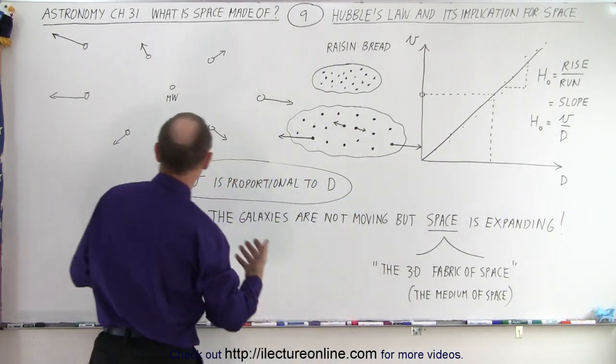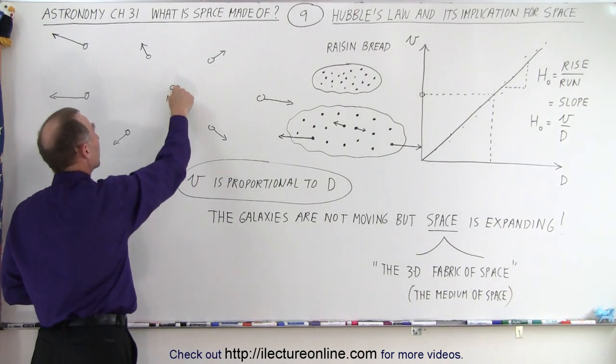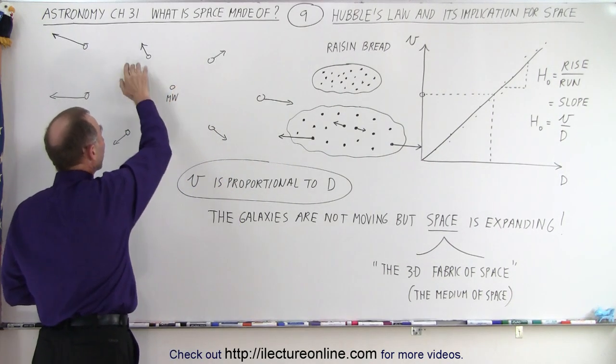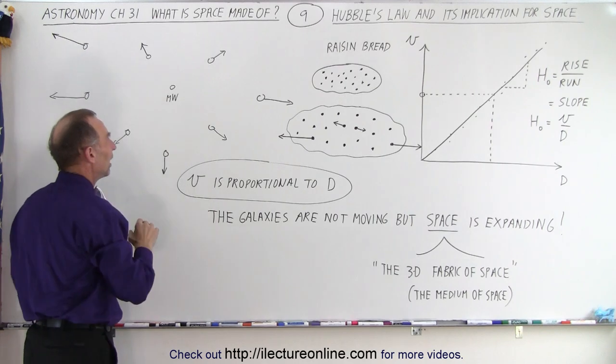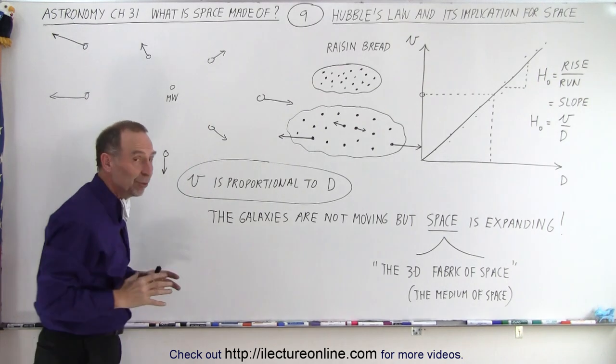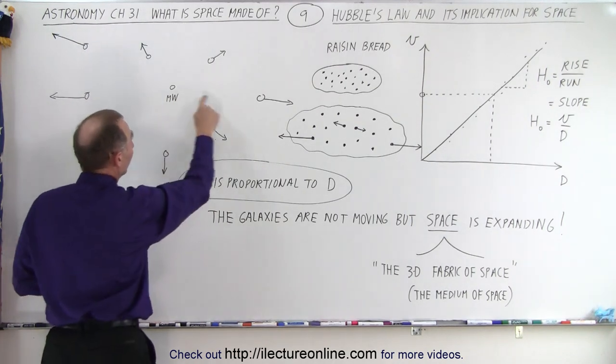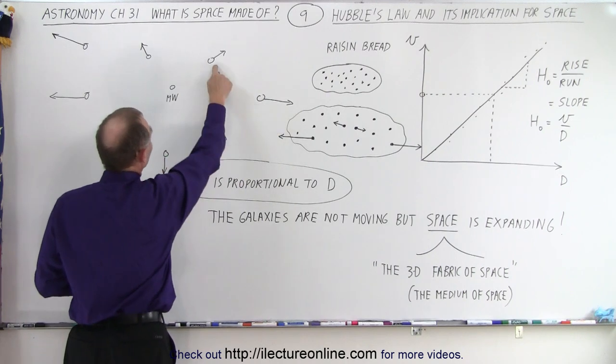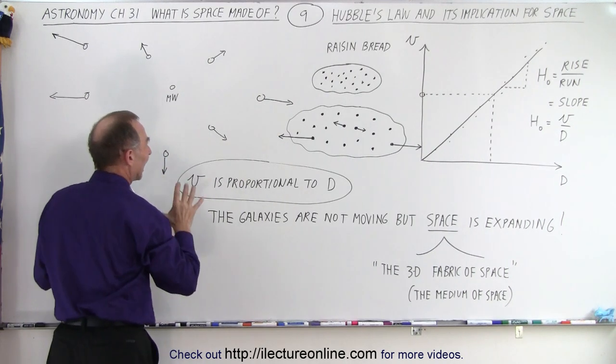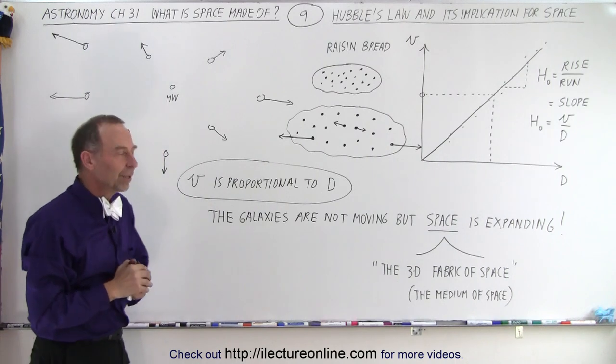So what does that mean? Well, take a look here. We're in our Milky Way galaxy. We're looking around us at our neighbors, and we see those galaxies moving away from us. And sure enough, if they're farther away from us, they move faster. If they're closer to us, they move slower. And so that is what Hubble was discovering.